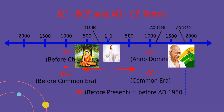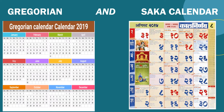Lord Buddha was born in 563 BCE. He was born 563 years before the birth of Jesus Christ. There are two types of calendars in this chapter: the Gregorian calendar and the Saka calendar.